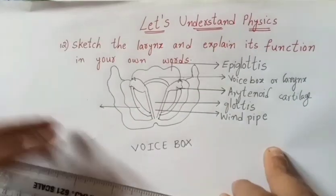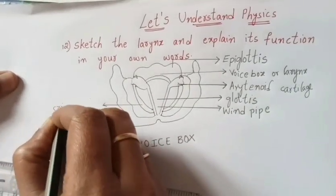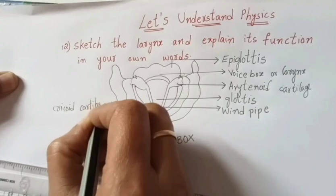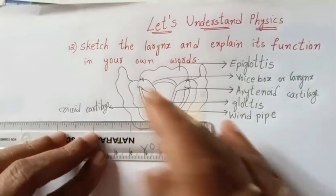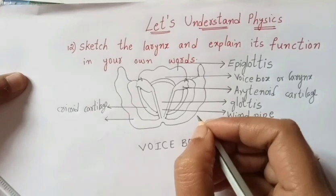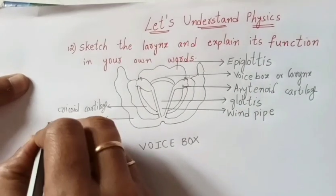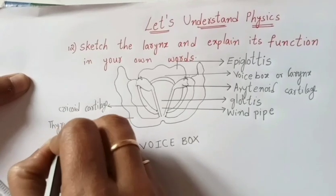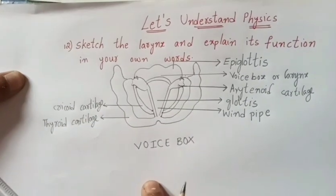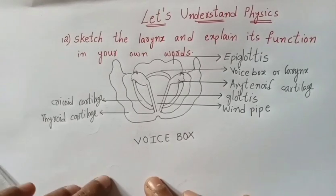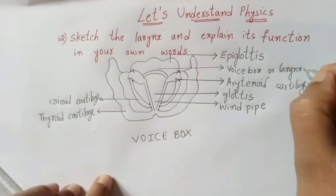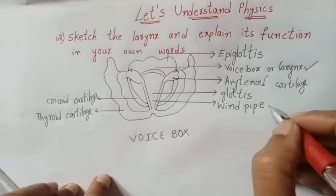I am doing this labeling here. This one, whatever two lines you have drawn, that is called cricoid cartilage. And then, the last one. This last one is called thyroid cartilage. All of them are your biology terms.